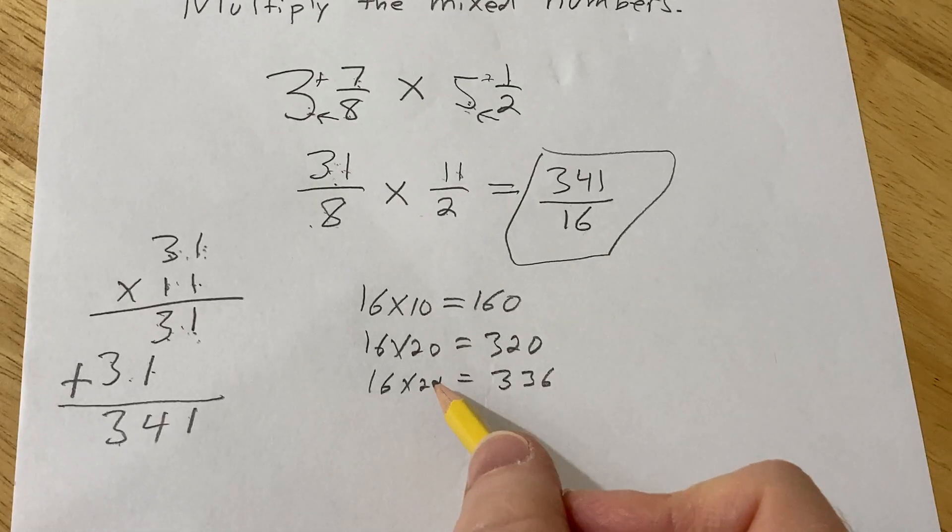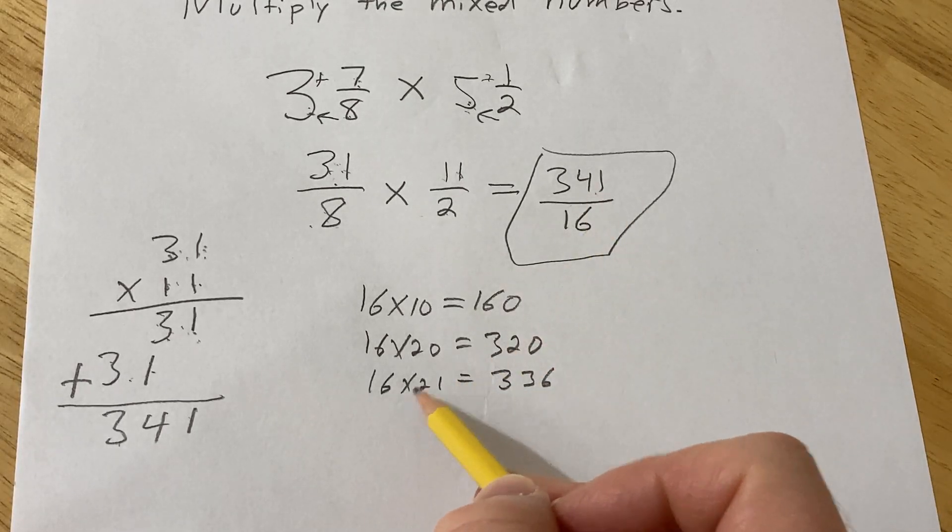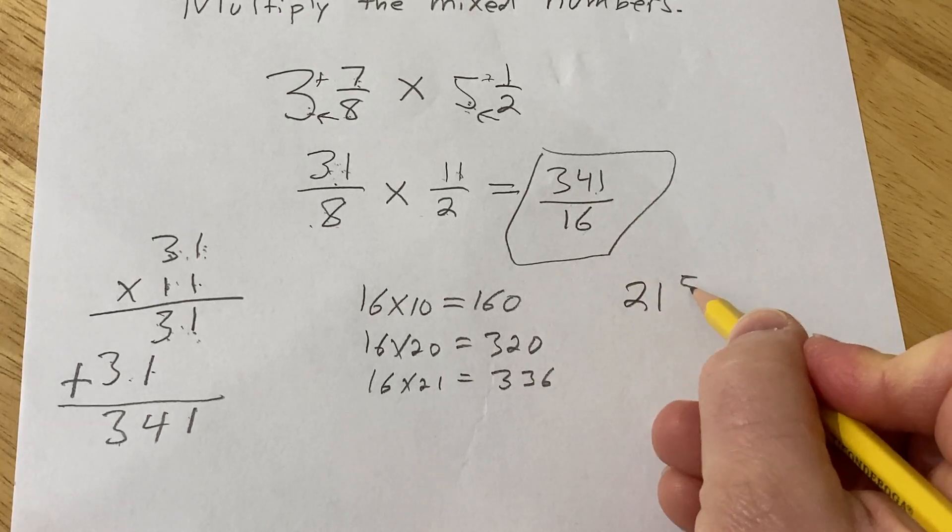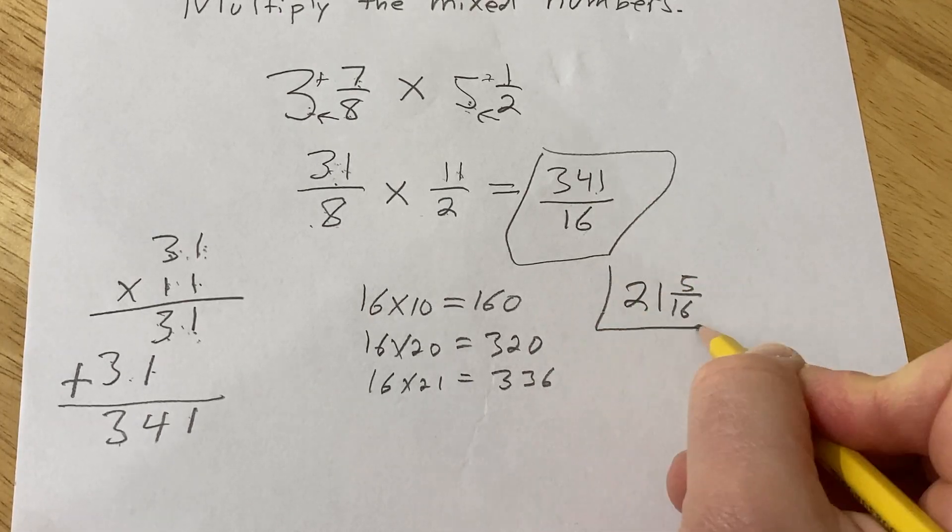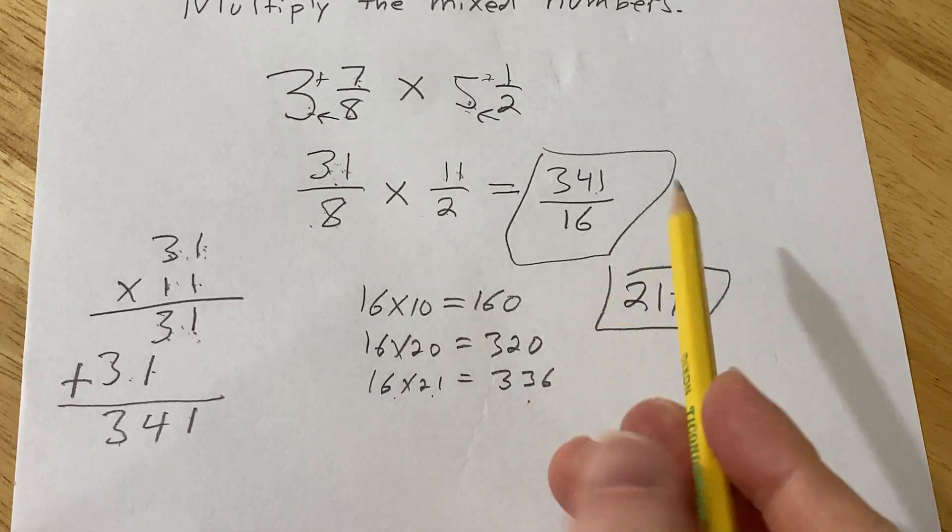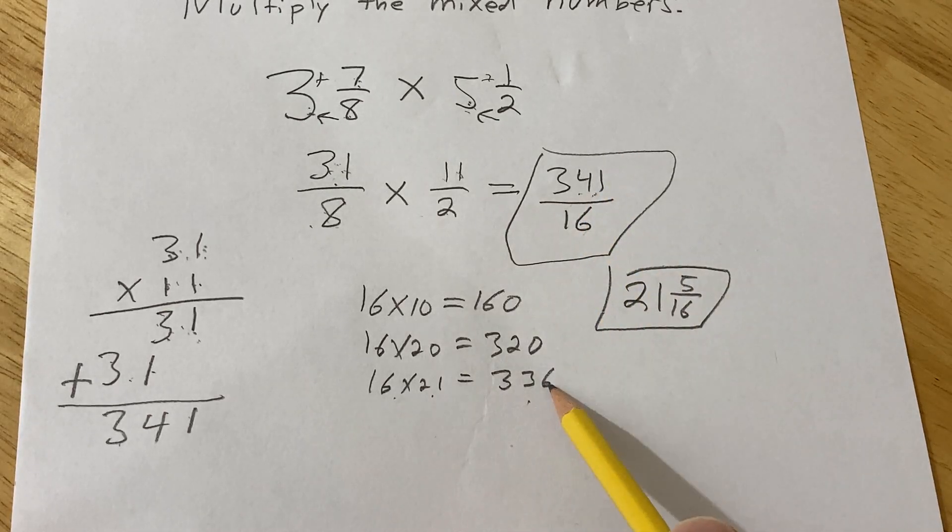So that means that 16 goes into 341 21 times. And we have 5 left over. Because 16 times 21 is 336. We're almost at 341. How much more do we need to get there? We need 5 more.